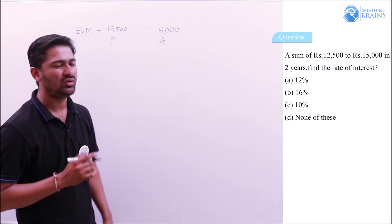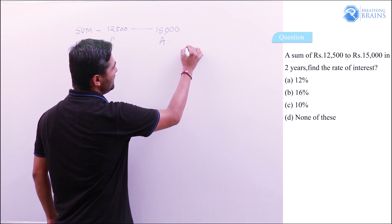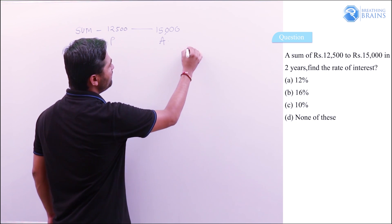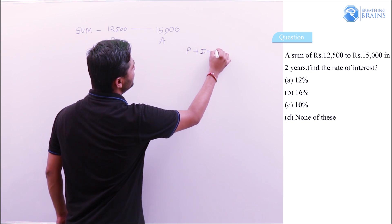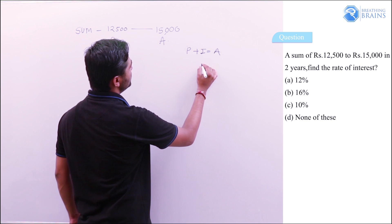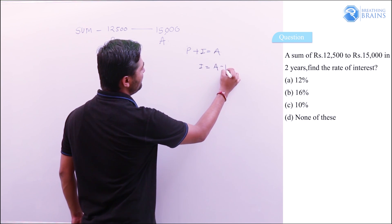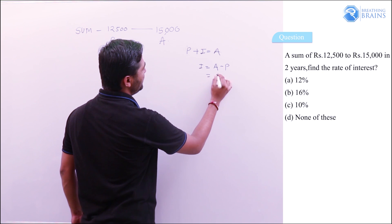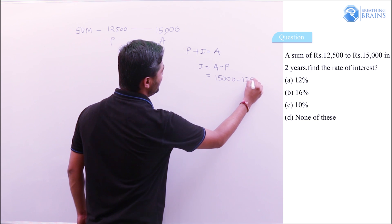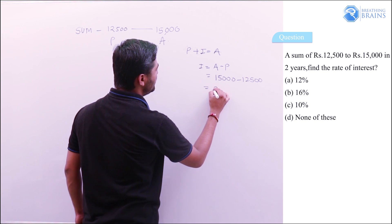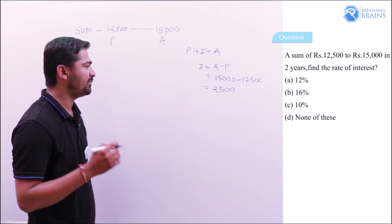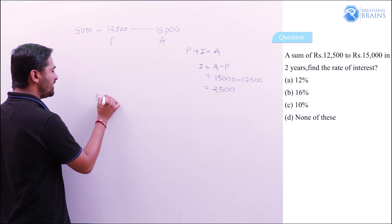The relation between principal and amount is: if you add interest to the principal, you get the amount. So amount is ₹15,000. Interest is calculated as amount minus principal: 15,000 minus 12,500, so the interest received in two years is ₹2,500.